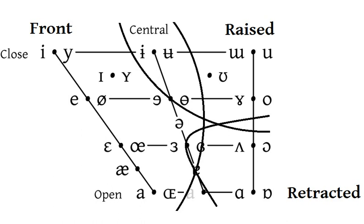A front vowel is any in a class of vowel sound used in some spoken languages. Its defining characteristic being that the highest point of the tongue is positioned relatively in front in the mouth without creating a constriction that would make it a consonant.